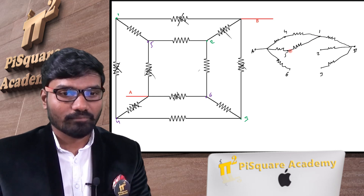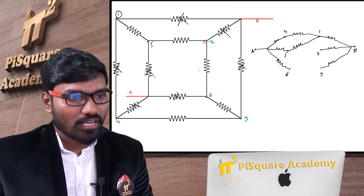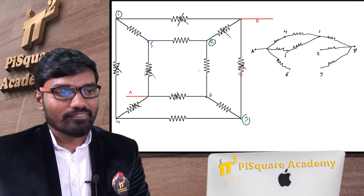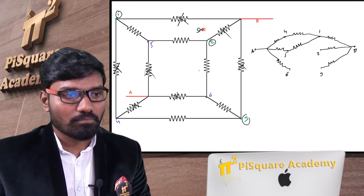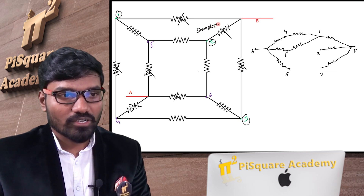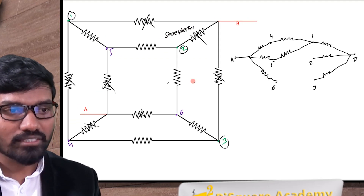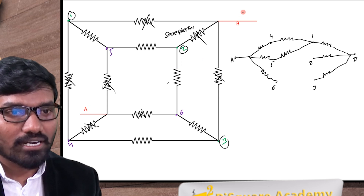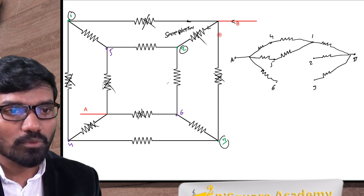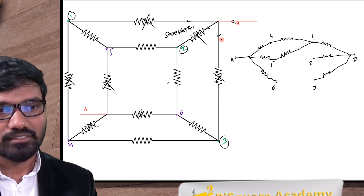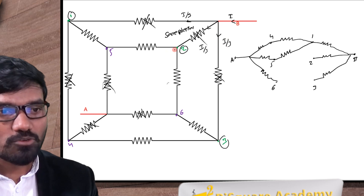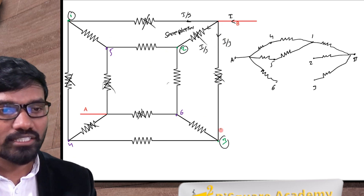Now here is the key point: points 1, 2, and 3 — those written in green color — are at the same potential, because all edges have the same resistance value. So if some current i is going in, it will divide equally: each branch gets i/3. So the potential at these 3 points will be the same.